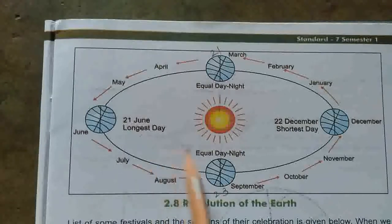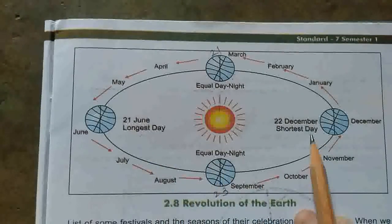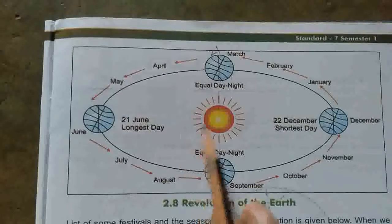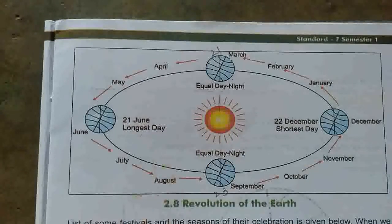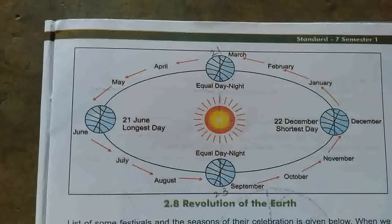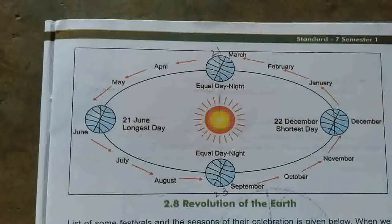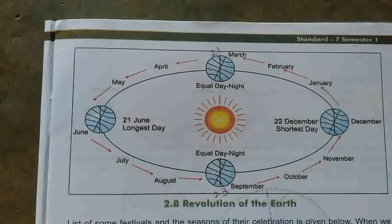21st June is the longest day and 22nd December is the shortest day. Day and night vary because of the sun rays. As the earth moves, the part with more sunlight experiences more heat — that is the summer season experience. Where there is darkness and less sunlight, that is the winter season.